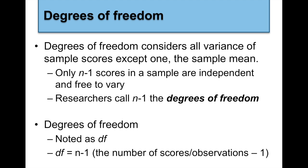The degrees of freedom at this point is still n minus 1 — the number of scores, observations, or people, minus 1. The degrees of freedom considers all variants of a sample score except the sample mean, which is excluded. So n minus 1 scores in a sample are independent and free to vary.